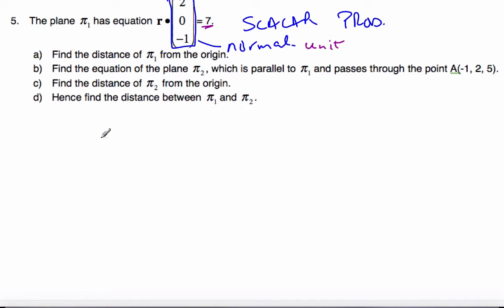So what I'm going to do is I'm going to find the magnitude of the normal. The magnitude of the normal is 2 squared plus 0 squared plus minus 1 squared, which is the square root of 5.